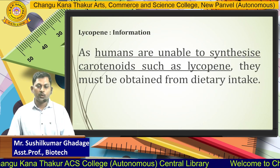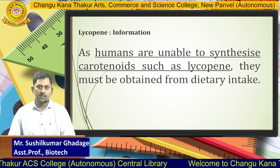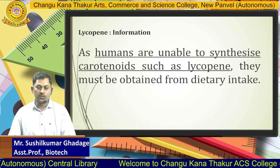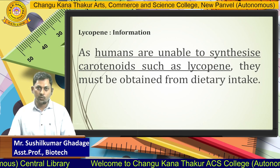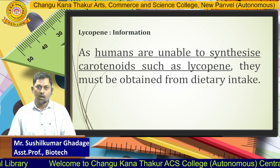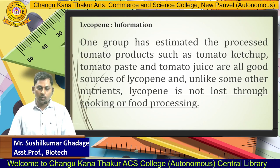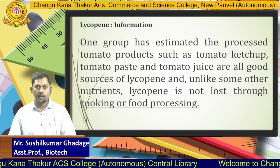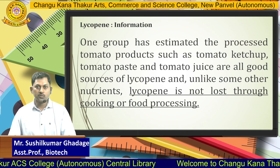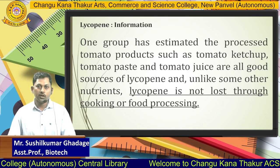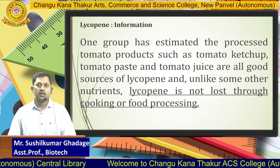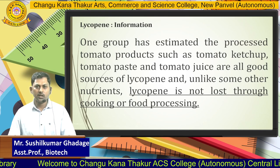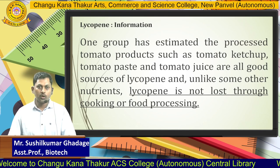Humans cannot synthesize carotenoids such as lycopene, so they must be obtained from dietary intake. Processed tomato products such as tomato ketchup, tomato paste, and tomato juice are all good sources of lycopene. Importantly, unlike some other nutrients, lycopene is not lost through cooking or food processing.